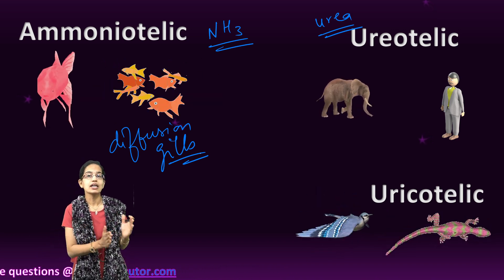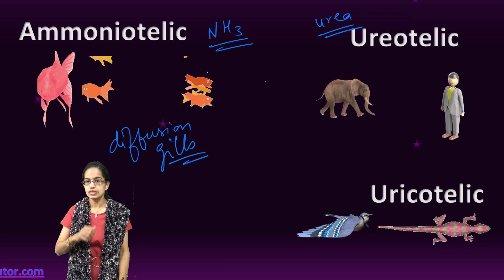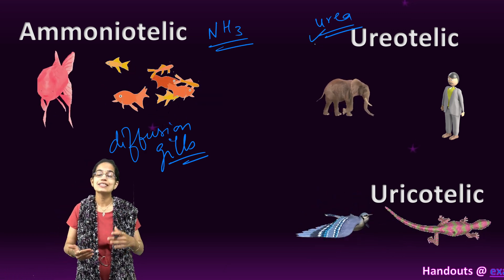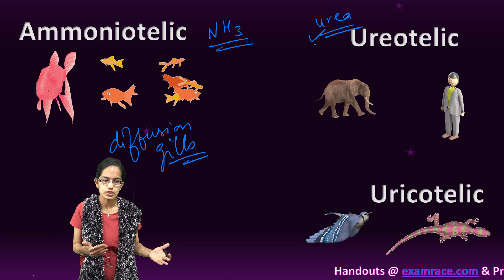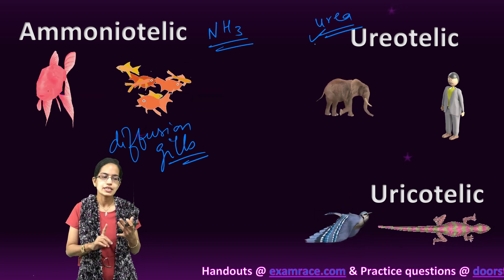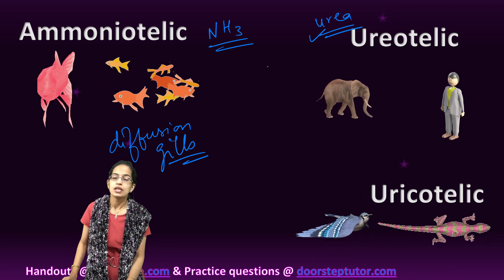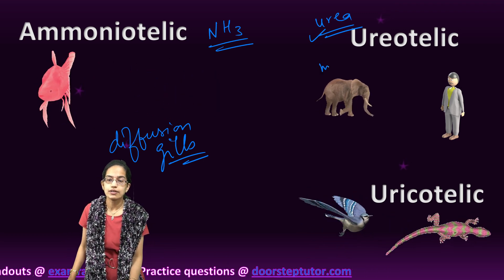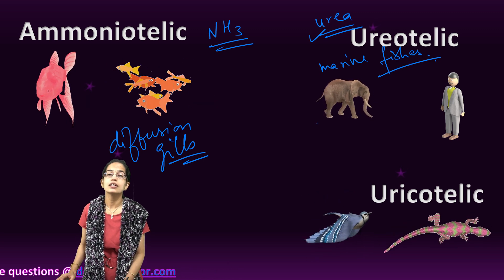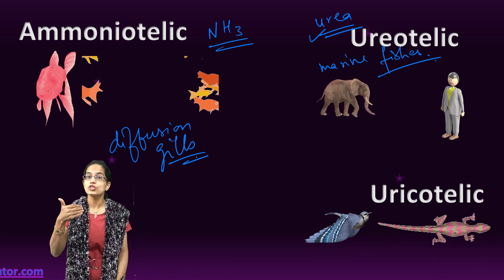In higher order organisms, the form of excretion changes into urea, and this urea is relatively less toxic. It is seen in mammals, terrestrial amphibians, and marine fishes — where ureotelic excretion occurs, that is, excretion as urea.